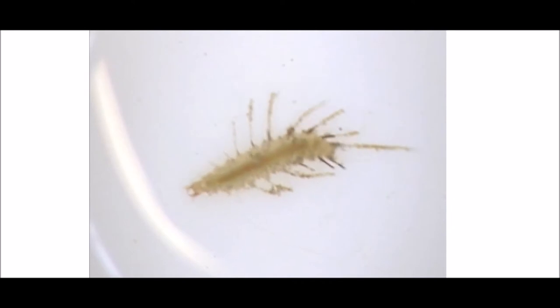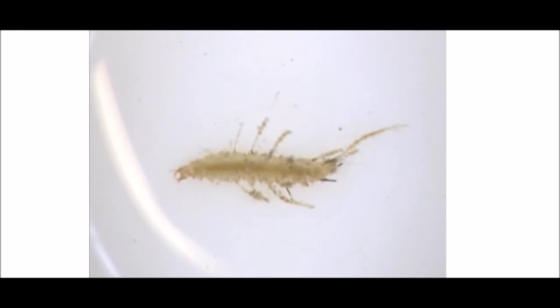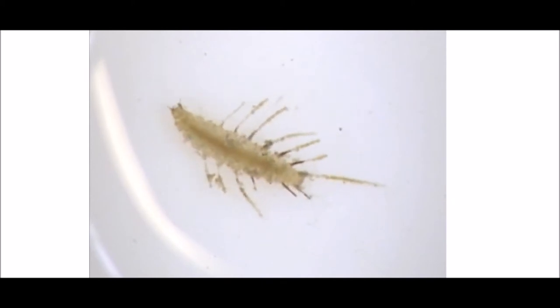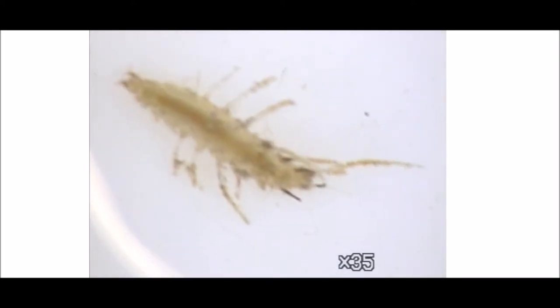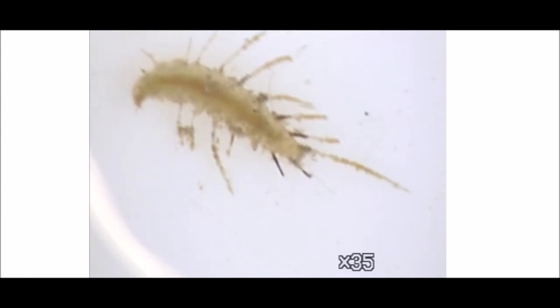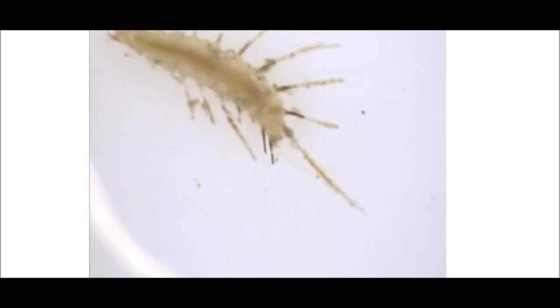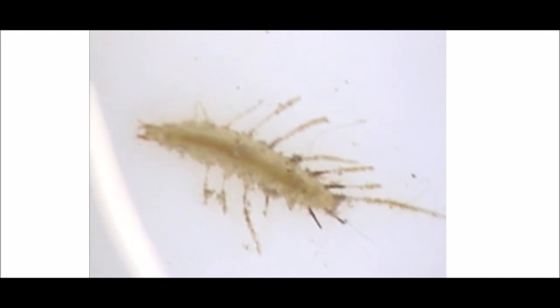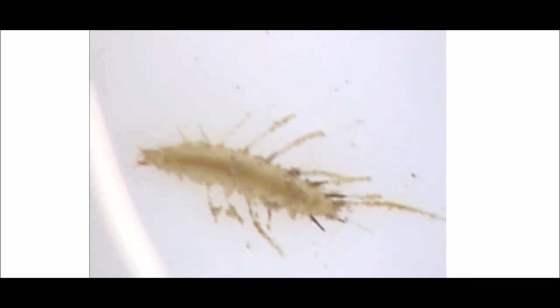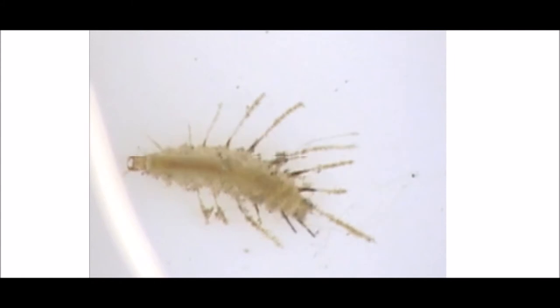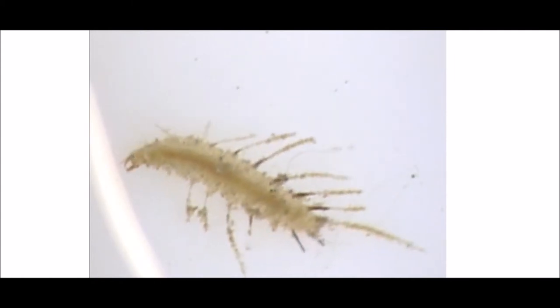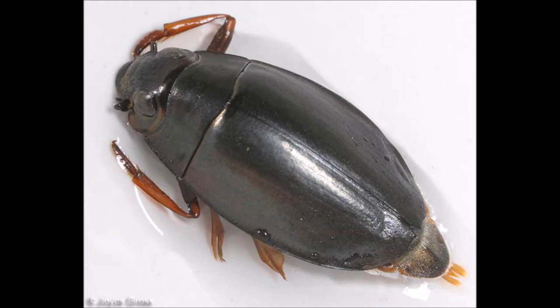This is a whirligig beetle larva. Those hairs on the side are actually their gills that absorb or take oxygen out of the water. If you look at the jaws, you can tell that they probably do eat other animals. The adults use an air bubble instead of gills. Whirligig beetles have big long front legs and they spin around in circles really quickly. What's really cool is they have two compound eyes — one above the water and one under the water — to help them better hunt their prey.